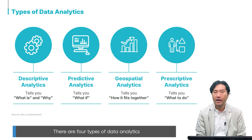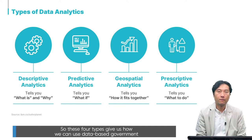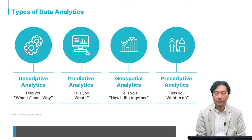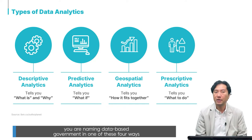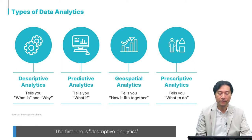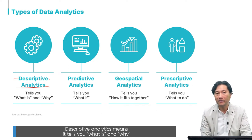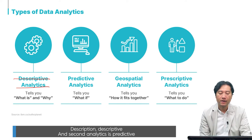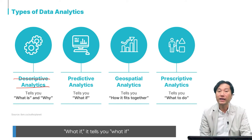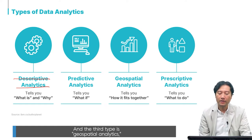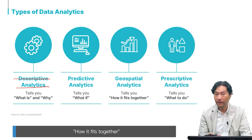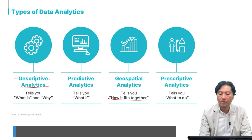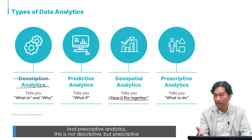Data-based government involves four types of data analytics that show how we can use it. The first is descriptive analytics — it tells you what is and why. The second is predictive analytics — what if, what will happen if something occurs. Third is geospatial analytics — how things fit together. And fourth is prescriptive analytics — what to do.